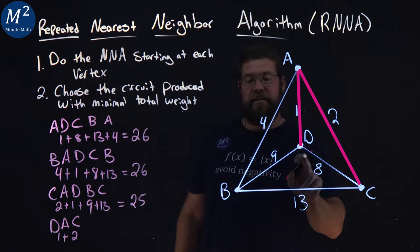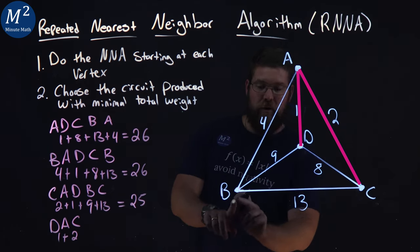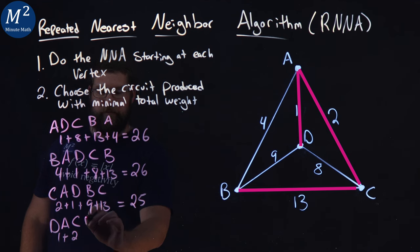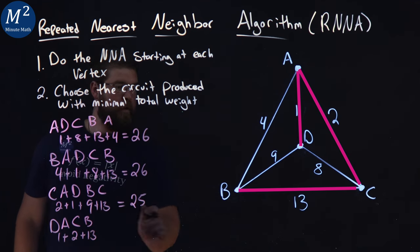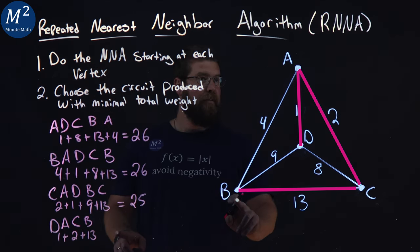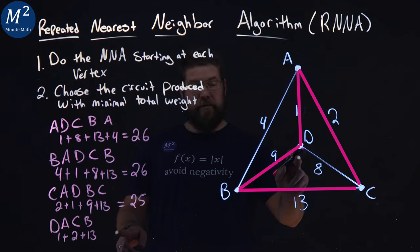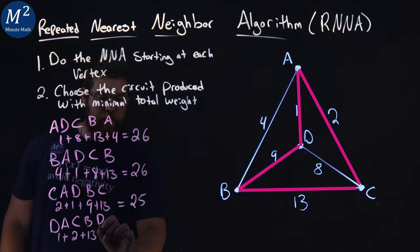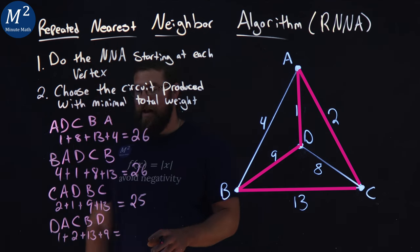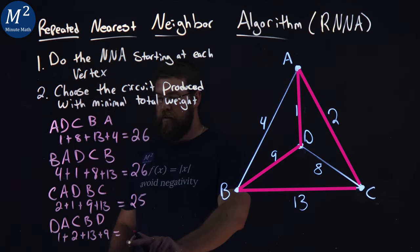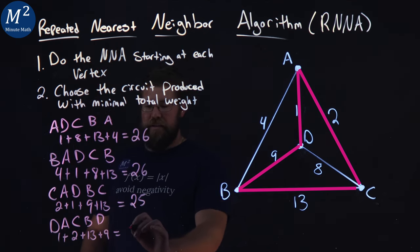I cannot go back to D because I haven't visited every single vertex. So now I have to go to B. And then from B, I've hit everything now. I have to go back to D. Go back to D. That's a 9. And there we have it. And that has a total weight here of also a 25.